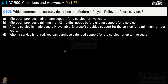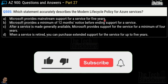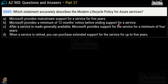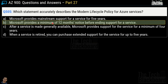Question 505: Which statement accurately describes the modern lifecycle policy for Azure services? Options are: Microsoft provides mainstream support for 5 years; Microsoft provides a minimum of 12 months notice before ending support for a service; after general availability Microsoft provides support for a minimum of 4 years; or when a service is retired you can purchase extended support for up to 5 years. The correct answer is option B — Microsoft provides a minimum of 12 months notice before ending support for a service.